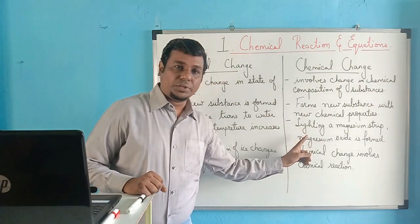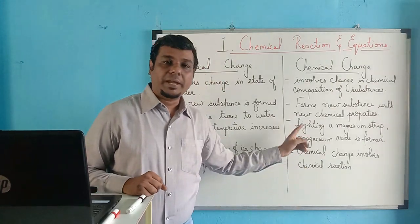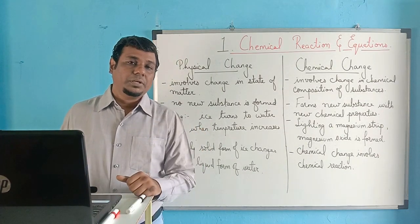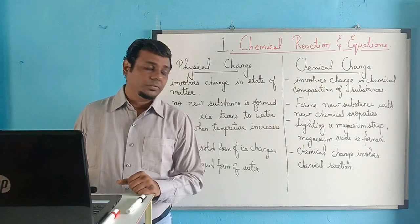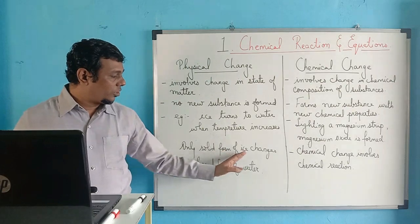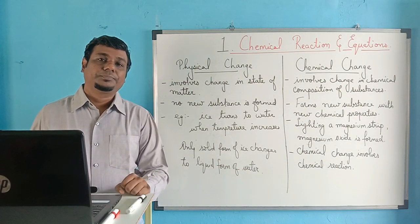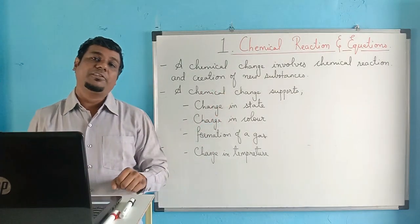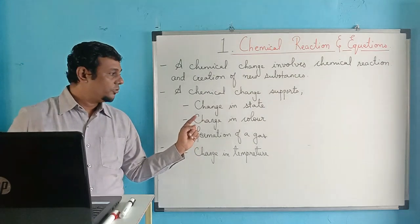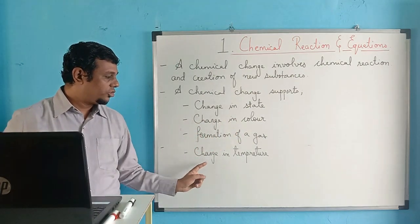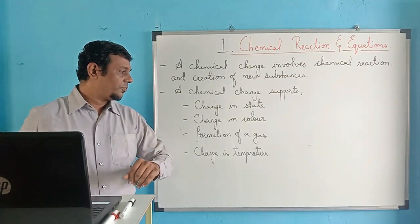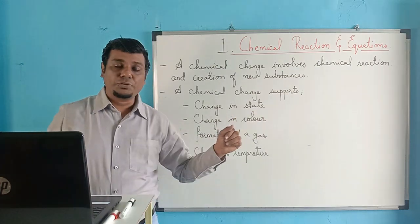An example given in our textbook is the burning of a magnesium strip. Magnesium oxide is formed — when you burn a magnesium strip, it forms white ash with a dazzling effect, and the white ash you get is magnesium oxide. Chemical change involves chemical reactions, which create new substances. It is accompanied by change in state, change in color, formation of a gas, and change in temperature.